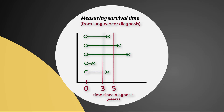You might ask what happens to people who haven't died by the end of the study period — at some point we have to write up our analysis, and many people in the sample may not yet have died. This issue is called censoring, and we'll look at that in the next video. For now, keeping things simple: we have 80% survival after three years and 40% survival after five years.